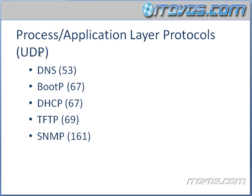Now let's talk about protocols that use UDP. We mentioned DNS earlier — it uses port 53, and it also uses TCP port 53. BootP uses port 67 UDP. DHCP also uses port 67. TFTP, trivial file transfer protocol, uses port 69 and is a more lightweight version of FTP. SNMP, or simple network management protocol, is on port 161.